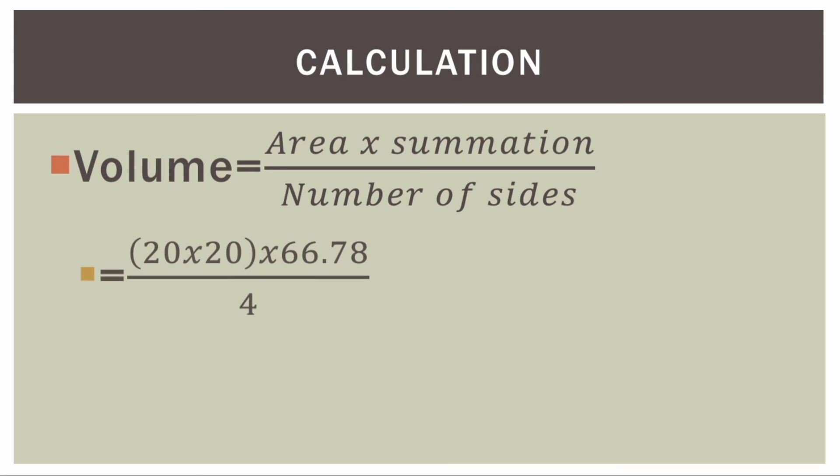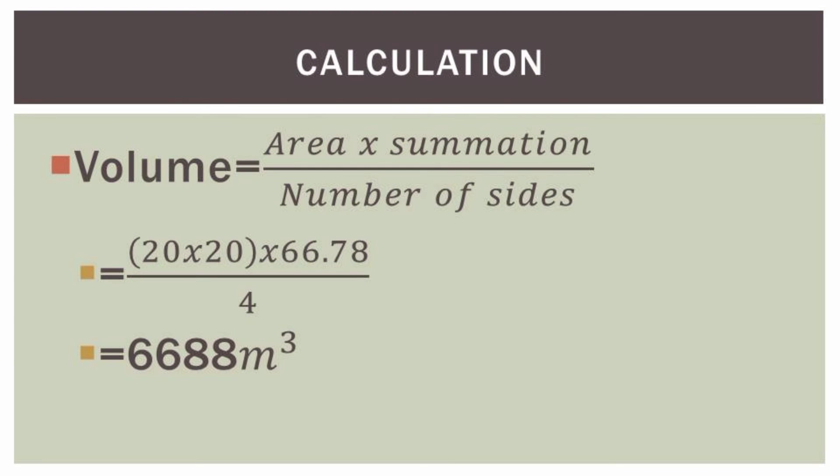The solution for the volume from spot heights is equal to the area of the square multiplied by summation, then later we divide by the number of sides. Here the square has four sides, so therefore the number of sides found within the square. If it was a triangle, we could have divided by three. Having done that, our answer becomes 6688 cubic meters.